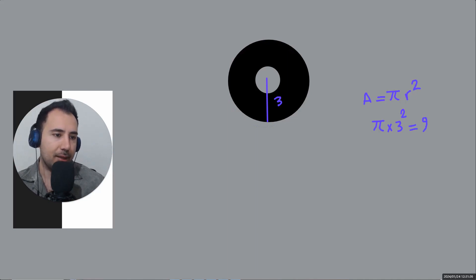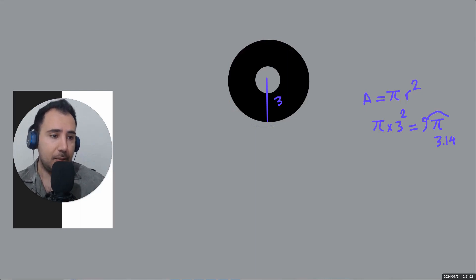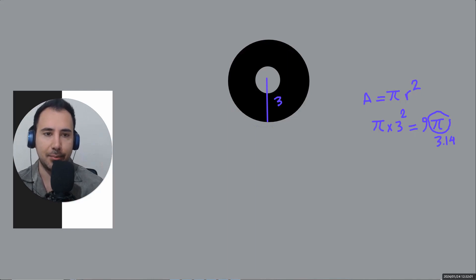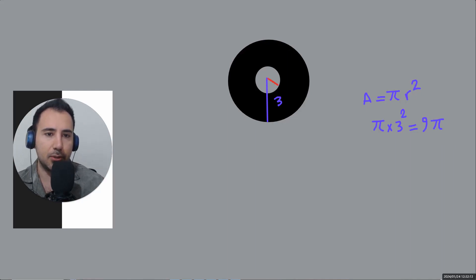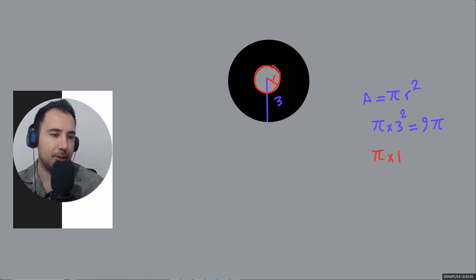We keep π symbolic rather than writing 3.14 because later π will cancel and we'd just be wasting time. So we go straight to 9π. For the smaller circle with radius 1, the area is π times 1 times 1, which is just π.